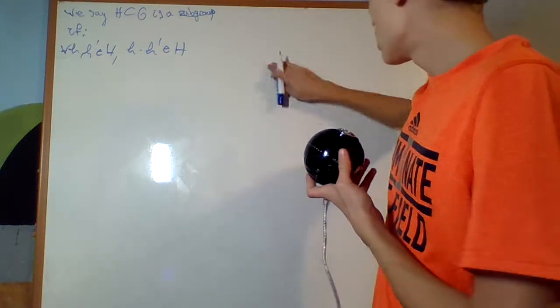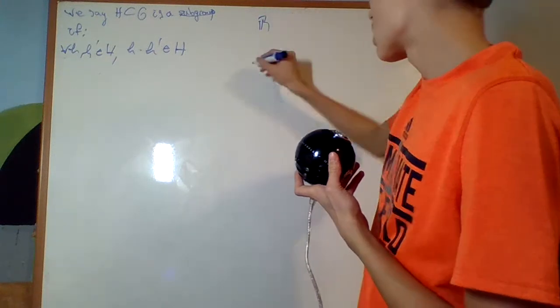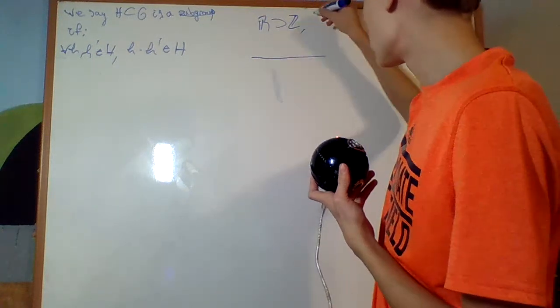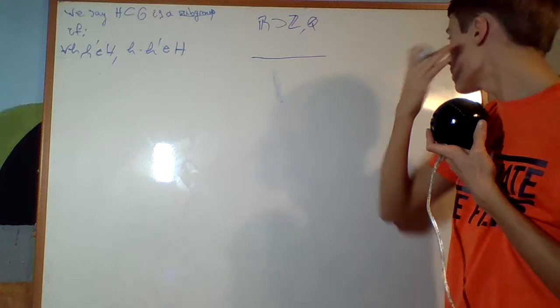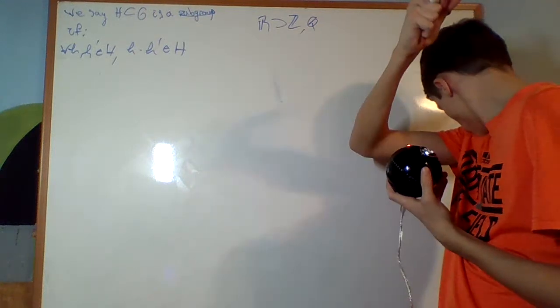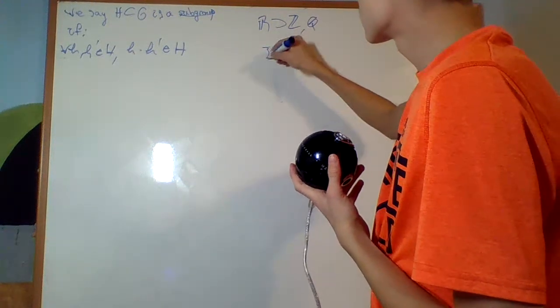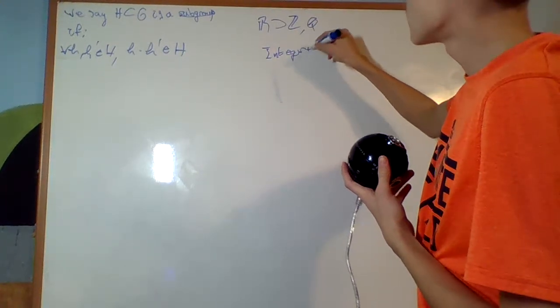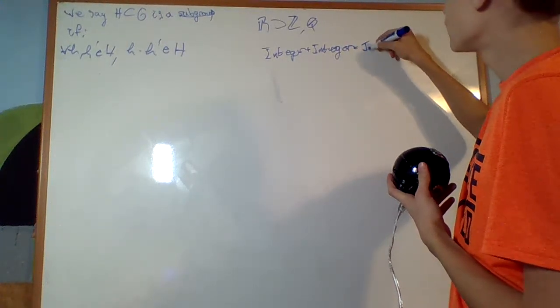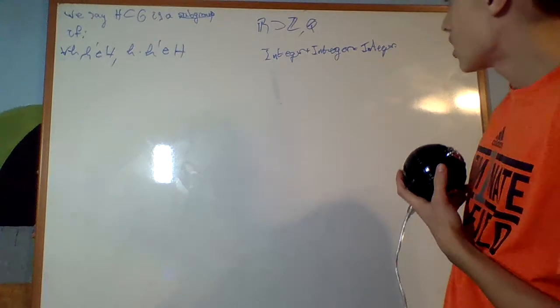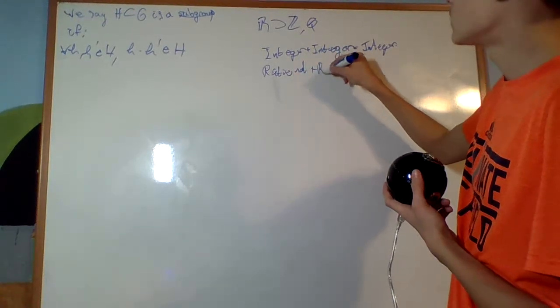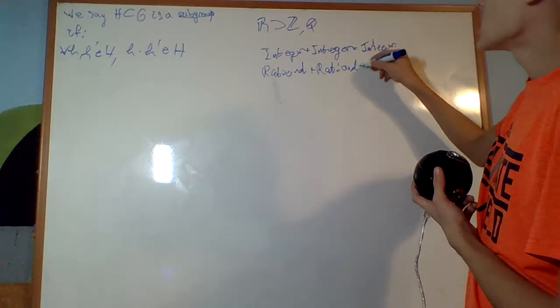Take, for example, on the real numbers, I could take the integers. I could also take the rationals, because those are subgroups, right? Because for any two integers, an integer plus an integer is an integer. And a rational plus a rational is a rational.